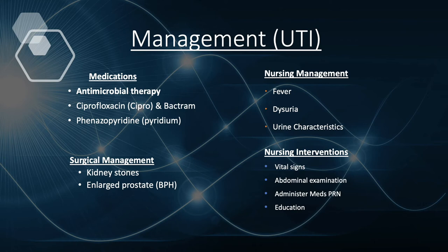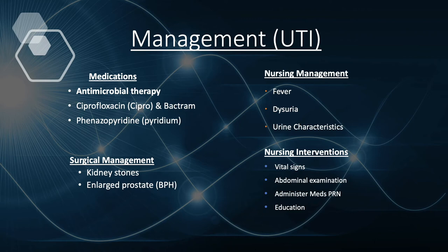Pyridium is a urinary analgesic that reduces dysuria — the pain upon urination. Note that Pyridium turns urine orange, so we need to educate the patient about this. With antibiotic therapy, patients must be instructed to take the full course to prevent drug resistance. If doses are missed, bacteria can become familiar with the antibiotic, making it harder to eliminate and potentially causing a recurrence of the infection.